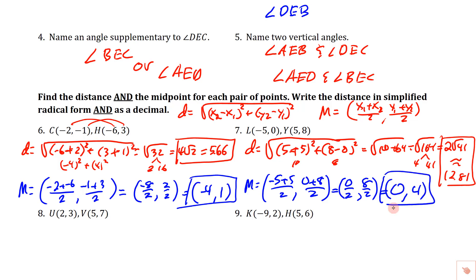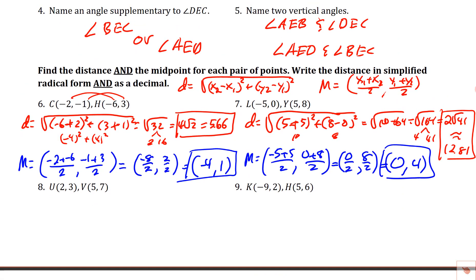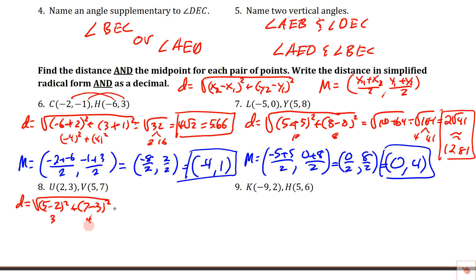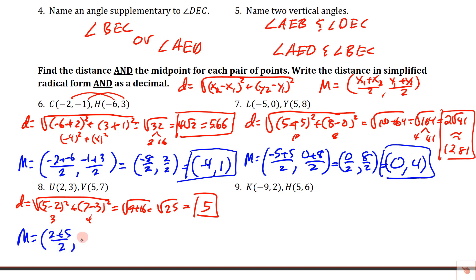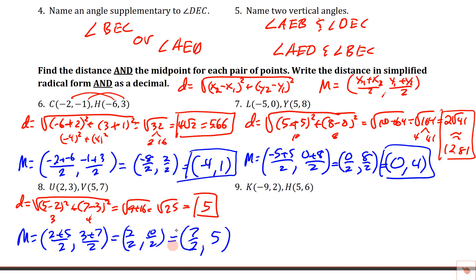For the third pair, distance = √((5 − 2)² + (7 − 3)²) = √(3² + 4²) = √(9 + 16) = √25 = 5. That's a nice whole number — no decimal approximation needed. Midpoint: ((2 + 5)/2, (3 + 7)/2) = (7/2, 10/2) = (7/2, 5).